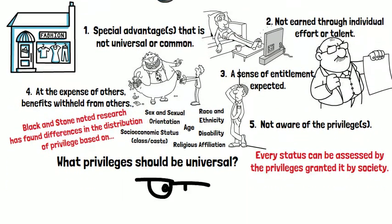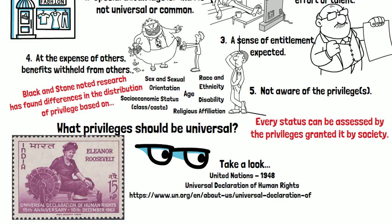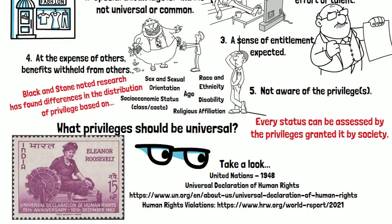I really like the United Nations Universal Declaration of Human Rights, written in 1948. I encourage you to take a look at it — it might be a good place to begin examining how we distribute privileges within our society. The United Nations also tracks human rights violations, and I encourage you to look at their human rights violation reports.